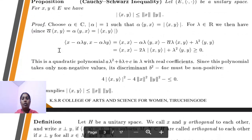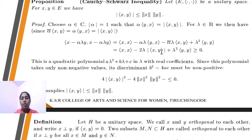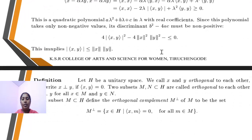Named theorem: Cauchy-Schwarz inequality. That is, |⟨h, y⟩| ≤ ‖h‖·‖y‖. In this theorem, we use the quadratic polynomial discriminant b² − 4ac ≤ 0. Using this condition, we get the Cauchy-Schwarz inequality: ⟨x, y⟩ ≤ ‖h‖·‖y‖.